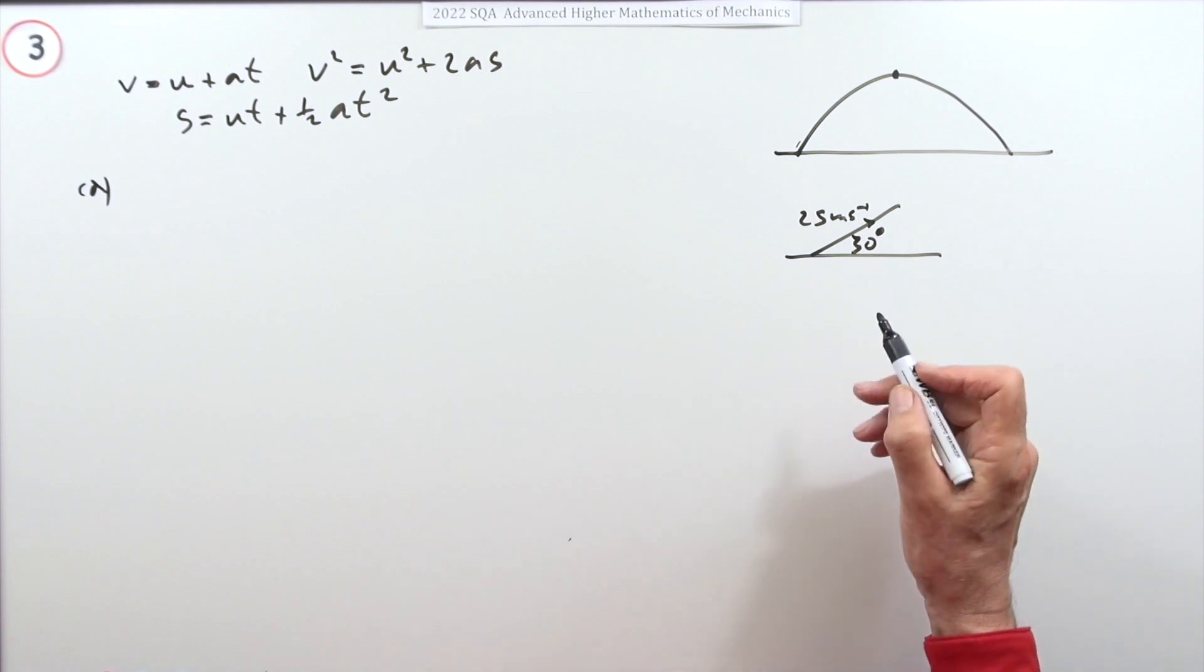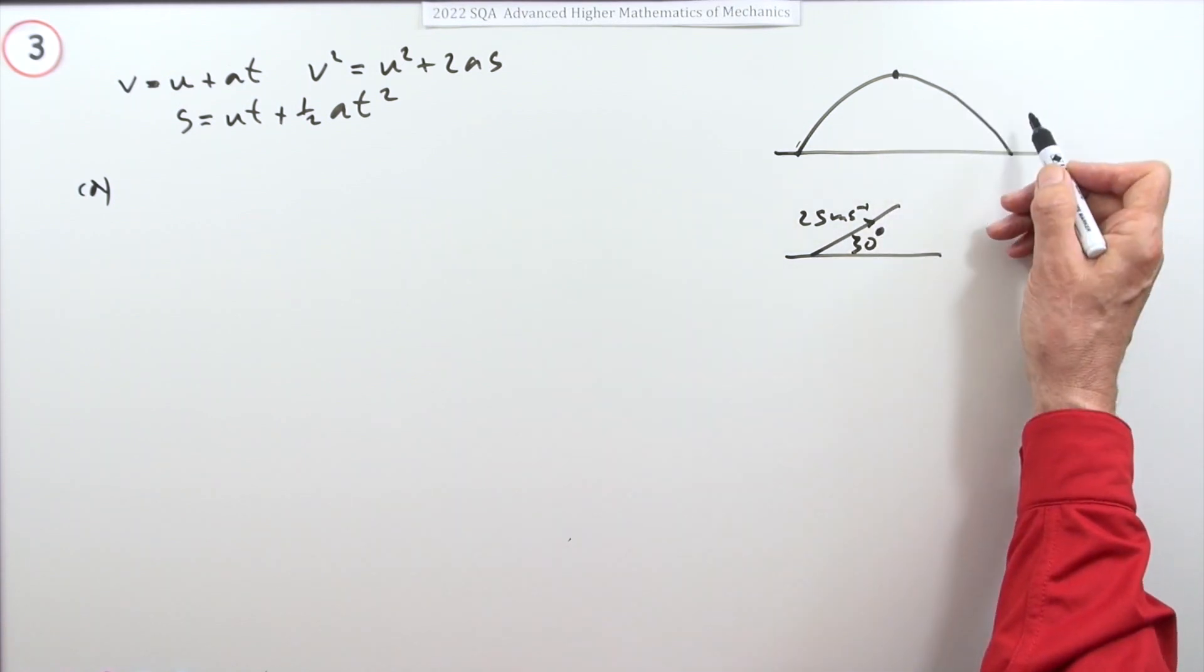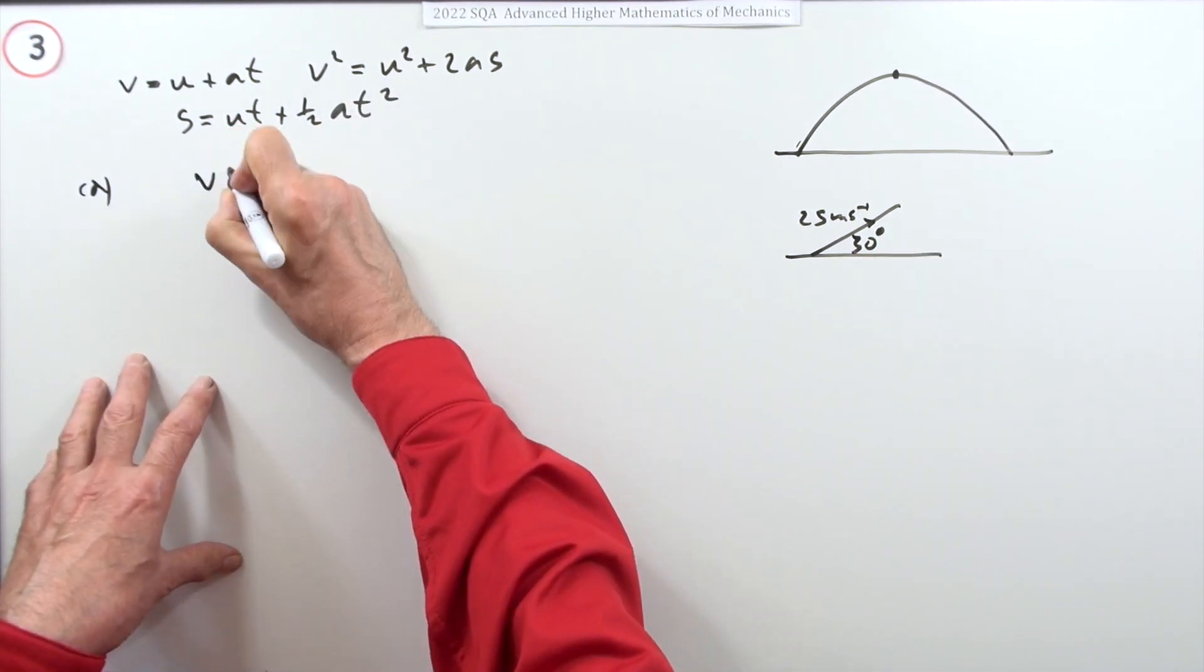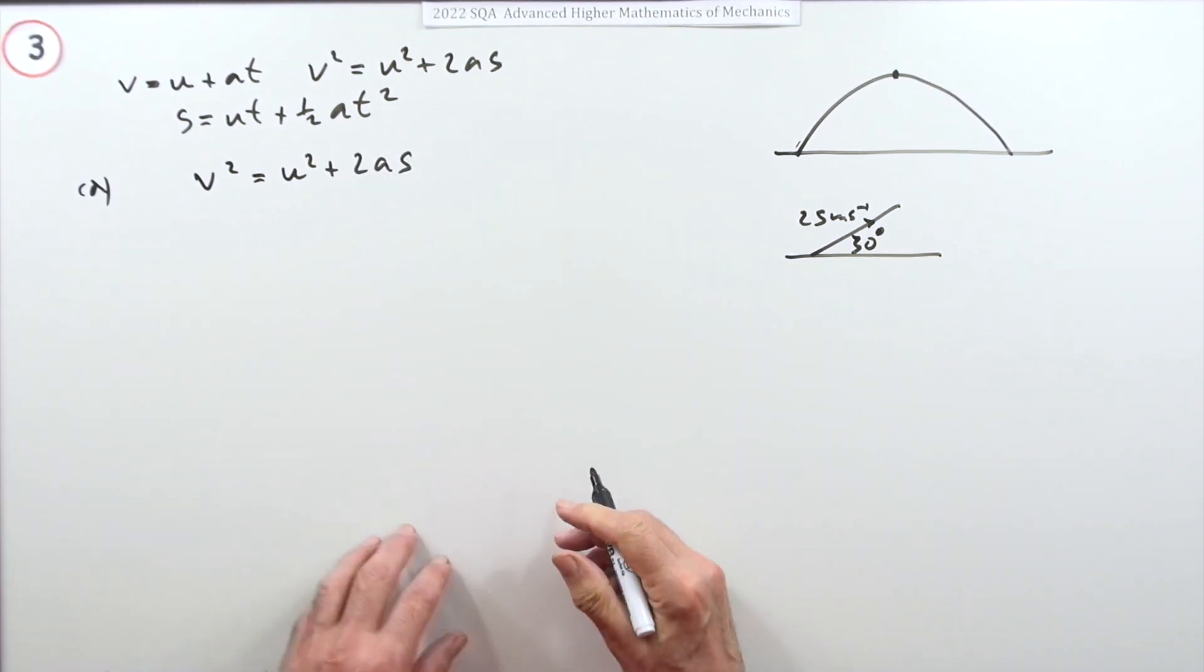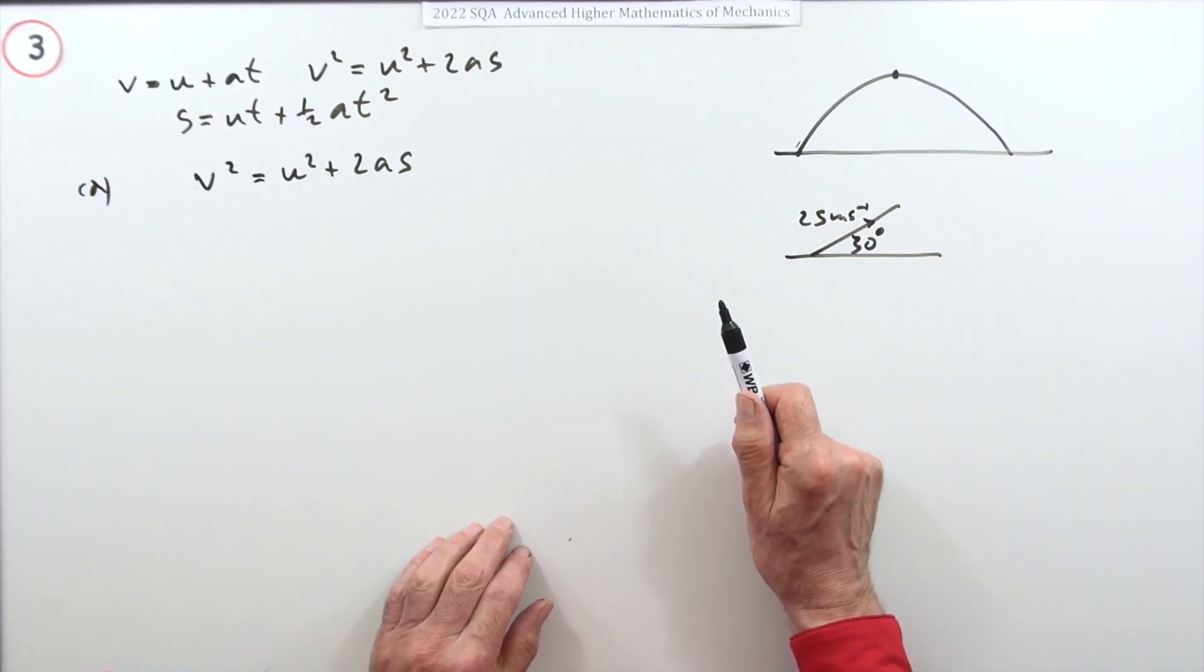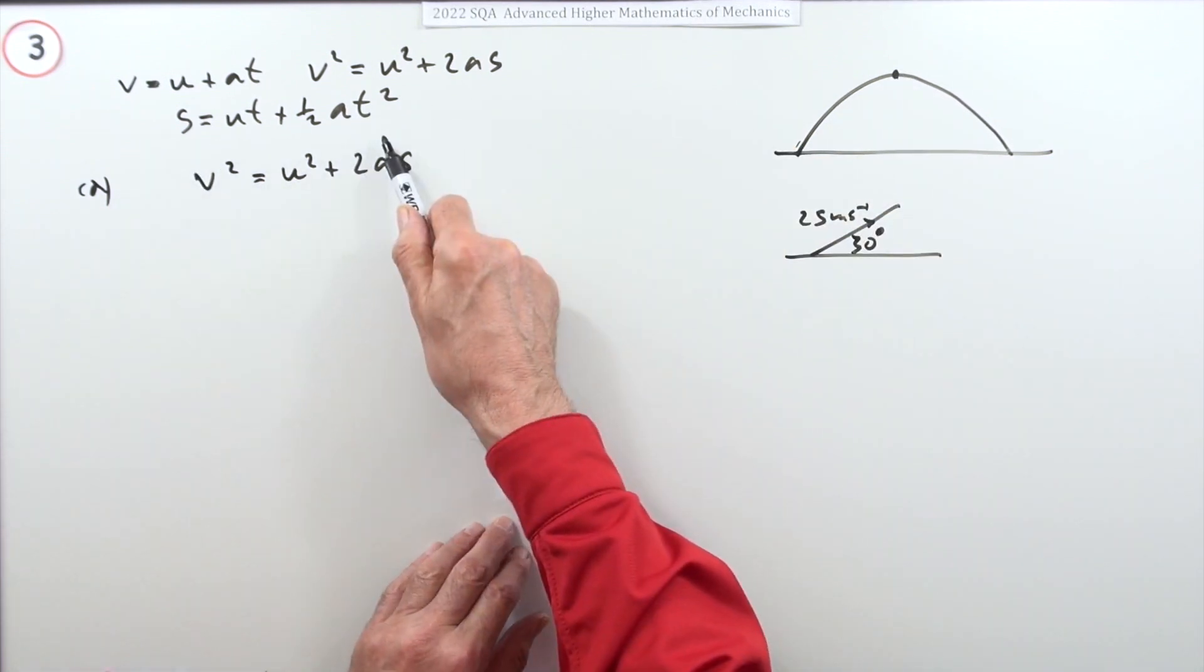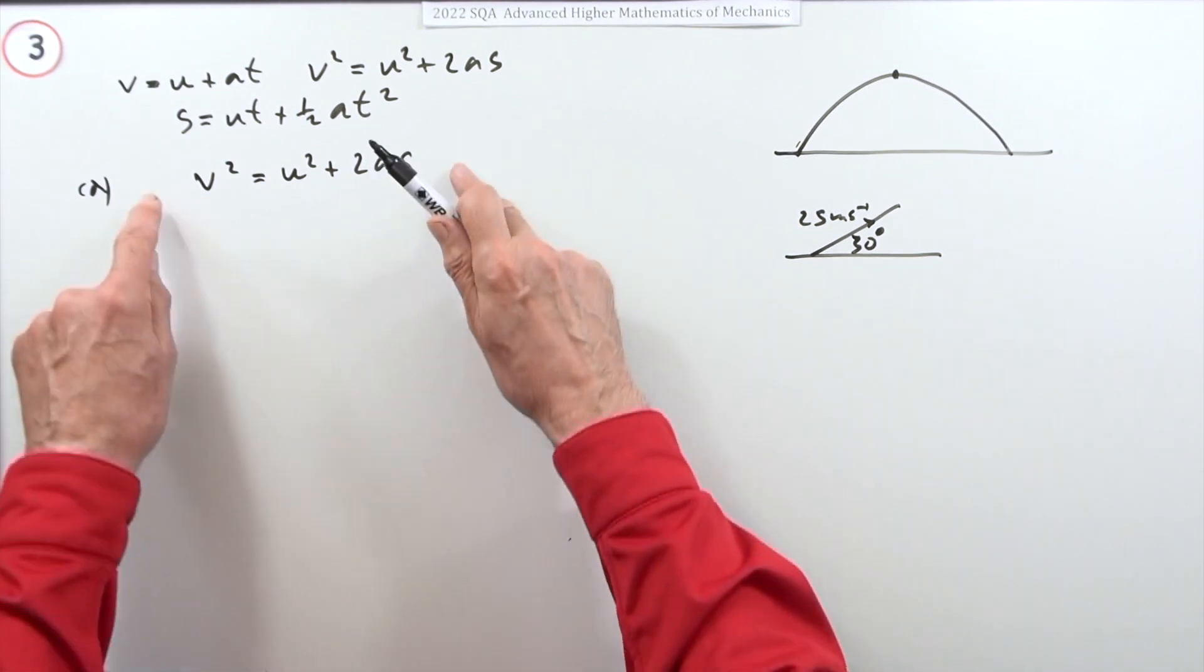I want the distance, the height, so it'll be one of these two with s in it. What do I know? I know the initial speed, the final speed at the top, and the acceleration due to gravity. So this is the one here, v squared is u squared plus 2as. You could go about it a long way, find the time to get to the top and then get the distance, but it'd be much more sensible to use a single equation.